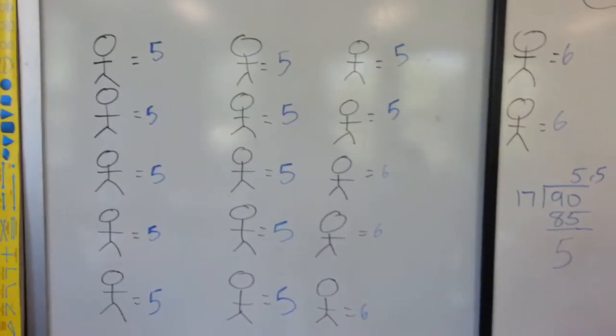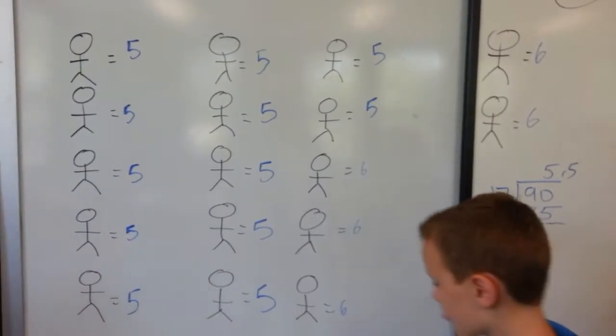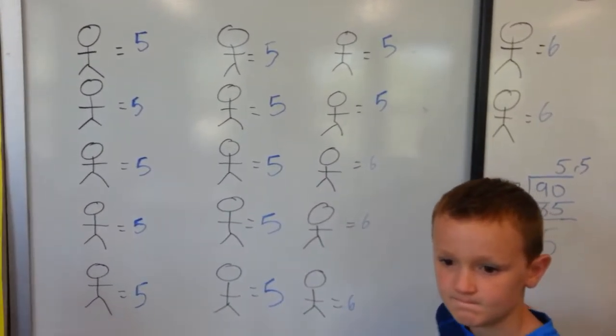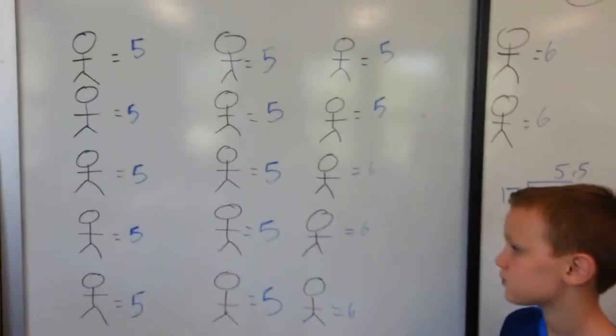There were 90 campers at camp escape. There were 17 instructors. Every instructor taught a group. Most groups have five campers. Let's pick up that binder, Aiden.